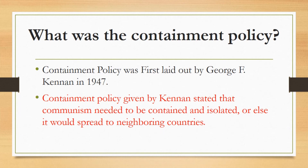What was the containment policy? The containment policy was first laid out by George F. Kennan in 1947. He was the Foreign Service Officer of the United States. The containment policy stated that communism needed to be contained and isolated, or else it would spread to neighboring countries. American foreign policy advisors believed that once one country fell to communism, each surrounding country would fall as well, like a row of dominoes — this view was known as the domino theory. Adherence to the policy of containment and the domino theory ultimately led to United States' intervention in Vietnam, as well as in Central America and Grenada.